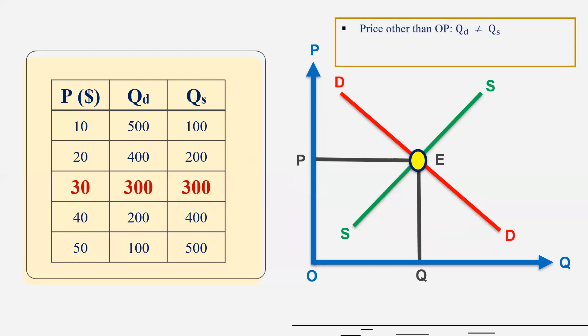So price other than OP, if we have a market price which is not equal to the equilibrium price, then we have the imbalance between quantity demanded and quantity supplied. At equilibrium price, these two are equal and therefore there is no reason to deviate from equilibrium point. There is no reason to change the market equilibrium price.